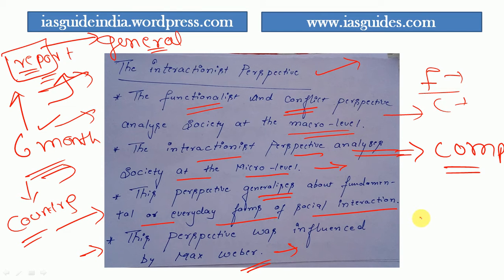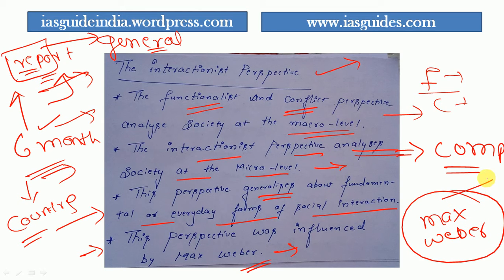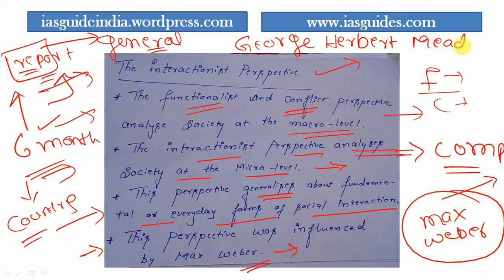This perspective was influenced by Max Weber, who worked extensively on the interaction perspective. Another very famous sociologist who contributed after Max Weber is George Herbert Mead, who also made significant contributions to the interaction perspective.